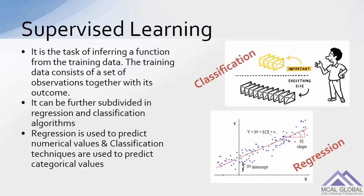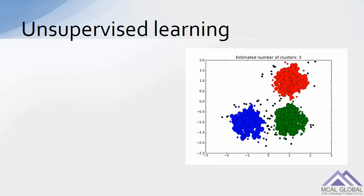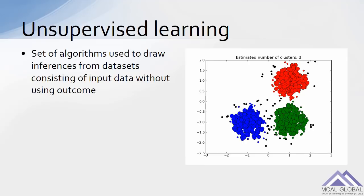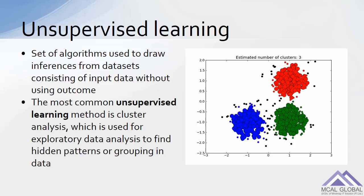Regression is used to predict numerical values and classification techniques are used to predict categorical values. Unsupervised learning is a set of algorithms used to draw inferences from data sets consisting of input data without using the outcome. The most common unsupervised learning method is cluster analysis, which is used for exploratory data analysis to find hidden patterns or groupings in data.